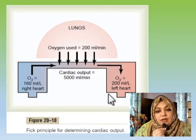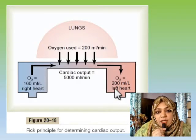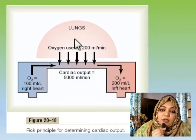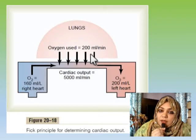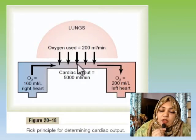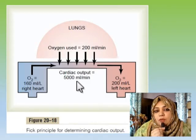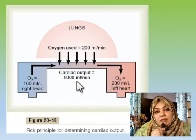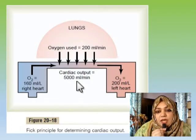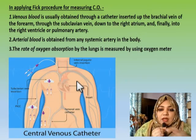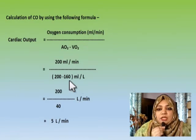So how much oxygen is absorbed? If we subtract 160 from 200, that gives us 40 ml — meaning 40 ml of oxygen is absorbed per liter of blood. The total amount of oxygen absorbed was 200 ml per minute. So 200 ml of oxygen was absorbed from the lungs into the pulmonary circulation, and 40 ml is absorbed by 1 liter of blood. Therefore, 200 ml of oxygen is absorbed by 5 liters of blood.